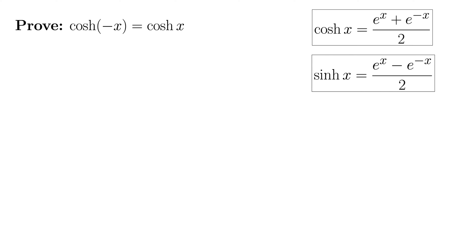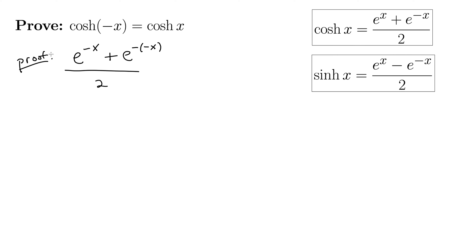We want to prove that cosh of negative x equals cosh of x. Let's just use the definition and see what happens. Cosh of negative x is e to the negative x plus e to the negative negative x, all over 2 — I'm just substituting negative x everywhere I see x. This proof simplifies to e to the negative x plus e to the x, all over 2, which is cosh of x again. Proven.